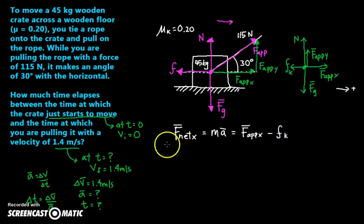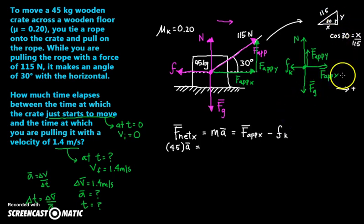I've got force net x equals mass times acceleration. And that equals, I am moving in this direction which means this has to be bigger and I'm going to assume that this way is positive. So force applied x minus the frictional force. I've got mass, that's 45 kilograms times my acceleration, and that will be equal to force applied x. Now how do I get that? I've got 30 degrees. I'm looking at a triangle where this is 30 degrees, this is 115, this is my y, this is my x. So I know that cosine 30 equals one side over the hypotenuse, x over 115. So my x is equal to 115 times cosine 30. So force applied x is 115 times cosine 30.